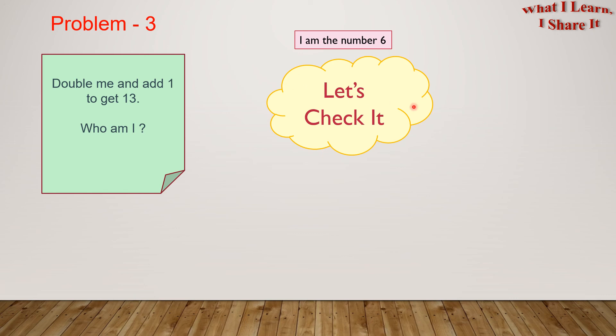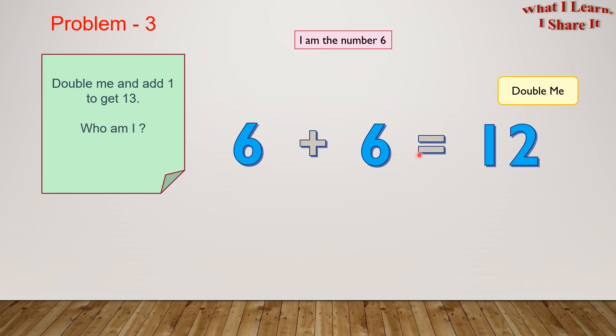Let's check our answer. Here we have 6. And the first clue is to double me. We'll do 6 plus 6 equals to 12. Here we have 12. And the next clue is to add 1. We'll do 12 plus 1 equals to 13. And 13 is also in our problem. This means our answer is correct.